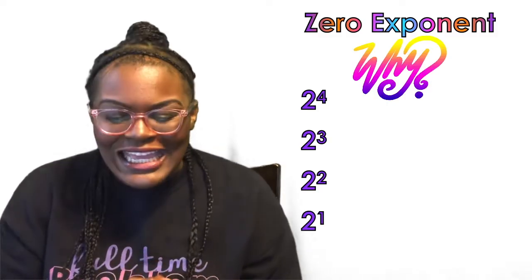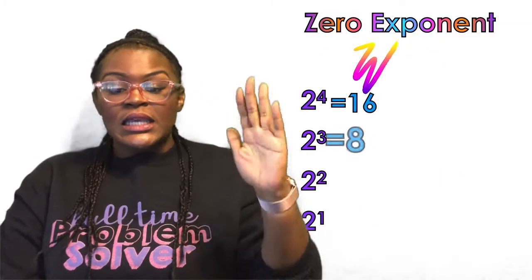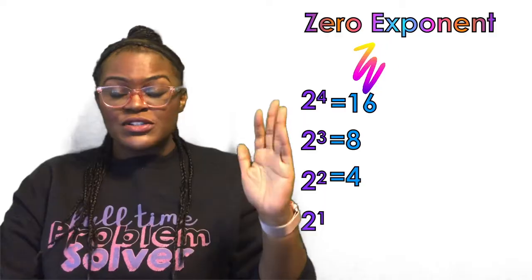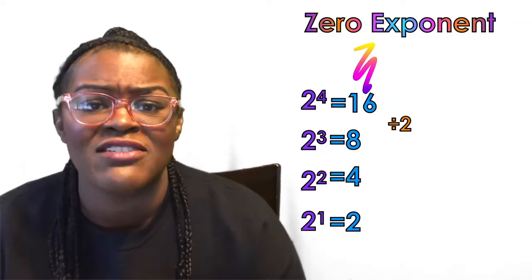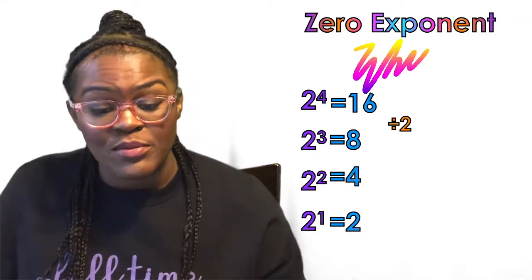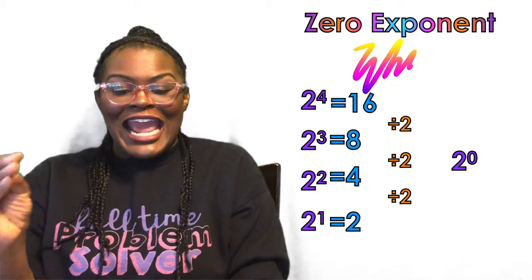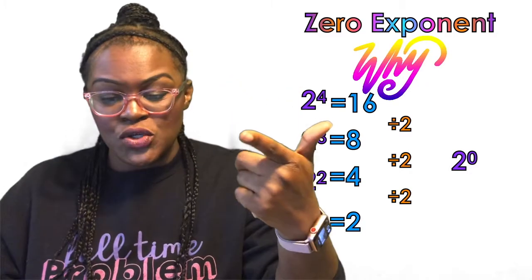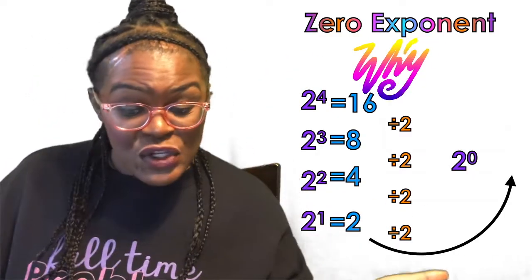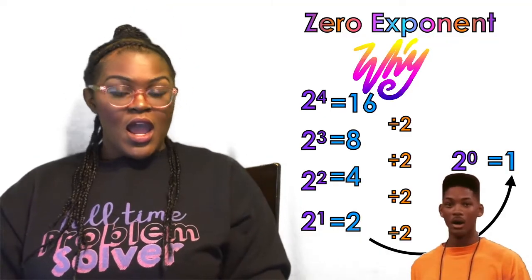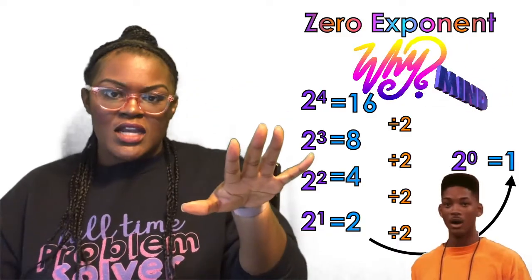So let's figure out why. You have two to the fourth, two to the third, two to the second, two to the first. Two to the fourth equals 16, two to the third equals 8, two to the second equals 4, two to the first equals 2. The pattern is that I'm dividing by two: 16 divided by 2 is 8, 8 divided by 2 is 4, 4 divided by 2 is 2. So naturally, I take that 2 and divide by 2 — two to the zero power equals one.